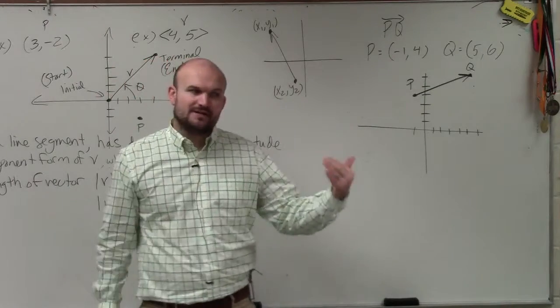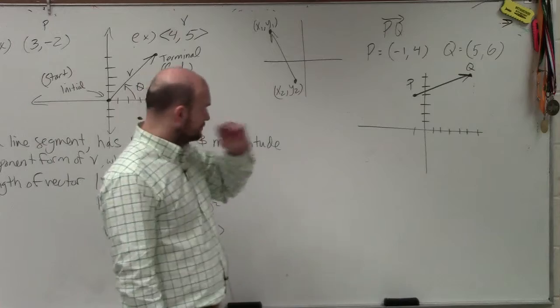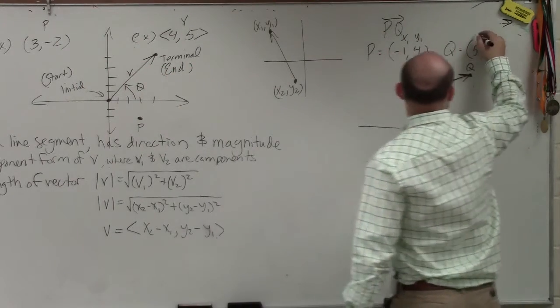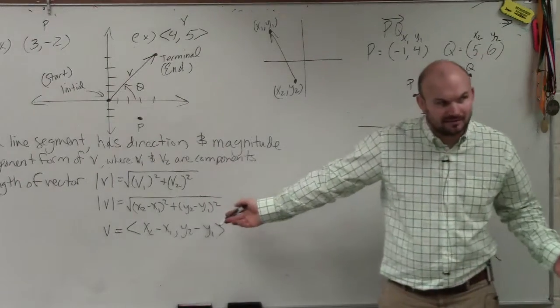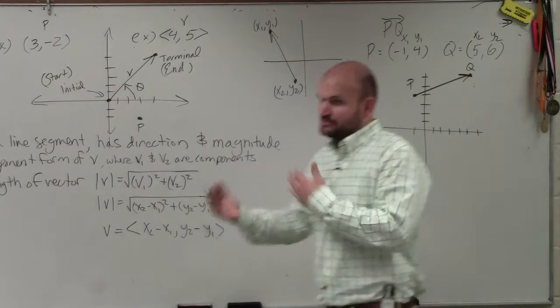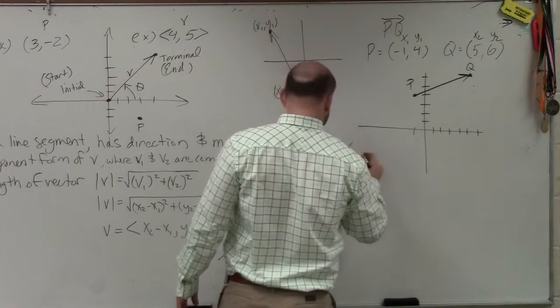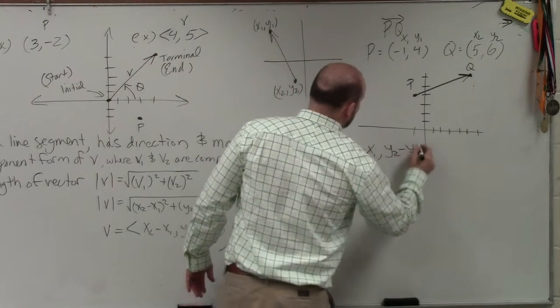But if you guys remember, if we want to find the magnitude and we want to find the component form, well, just as it is, we could say that's x1, that's y1, that is x2, y2. We could figure out the magnitude, right? Correct? Or we could just figure out what the component form is, and it would just make it a little bit easier. So if I was going to find the component form, again, that is going to be x2 minus x1 comma y2 minus y1.